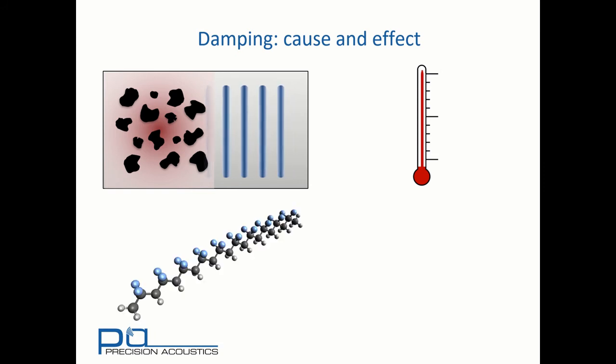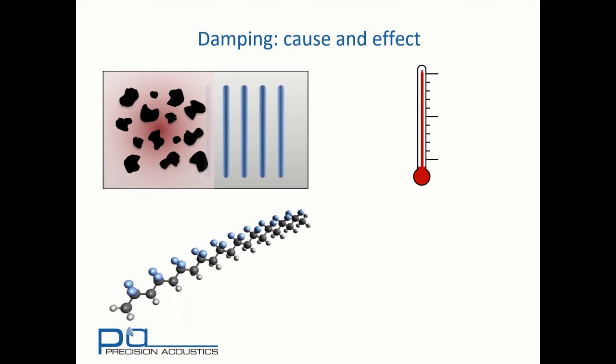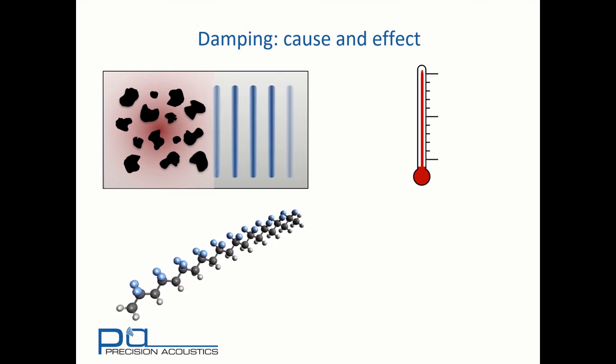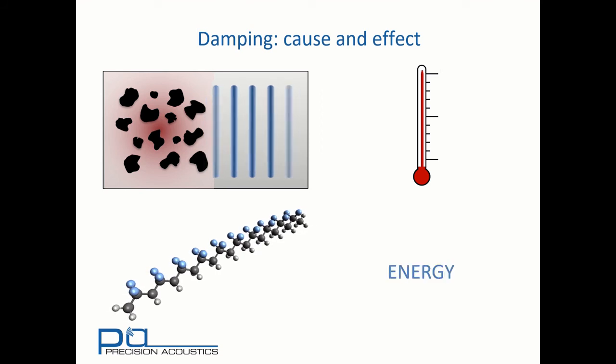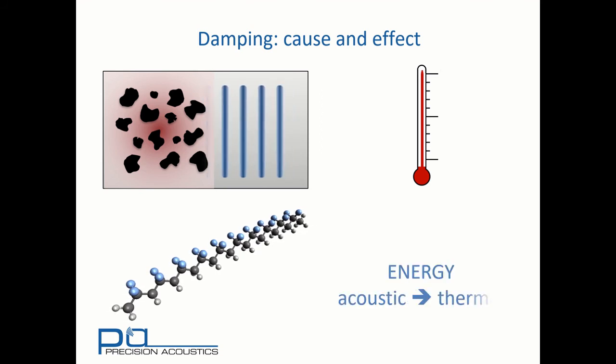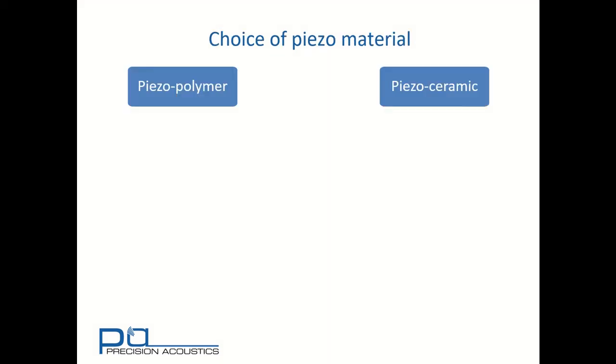We may also see thermal effects if we have expansion and contraction of polymer chains as a result of interaction with an ultrasonic wave. All polymers are viscoelastic, and therefore there will be some loss associated with this, and that loss of energy is also as a form of heat. In either case, we've seen that energy has been converted from acoustic energy to thermal energy, and otherwise useful acoustic output has become heat.